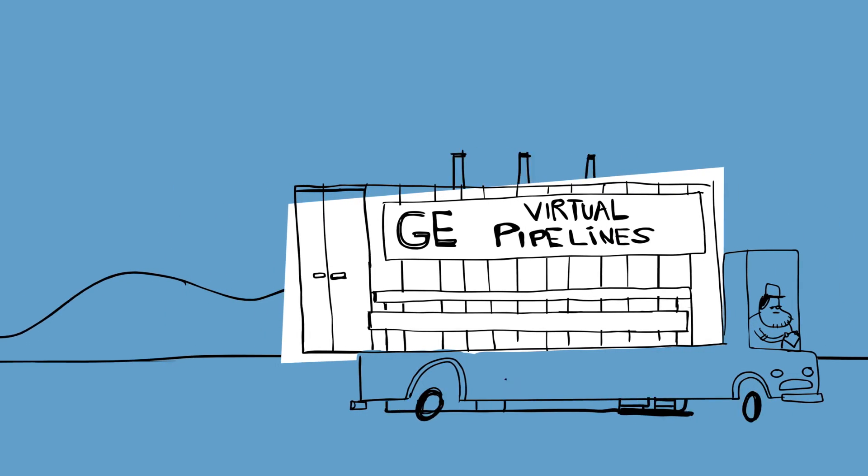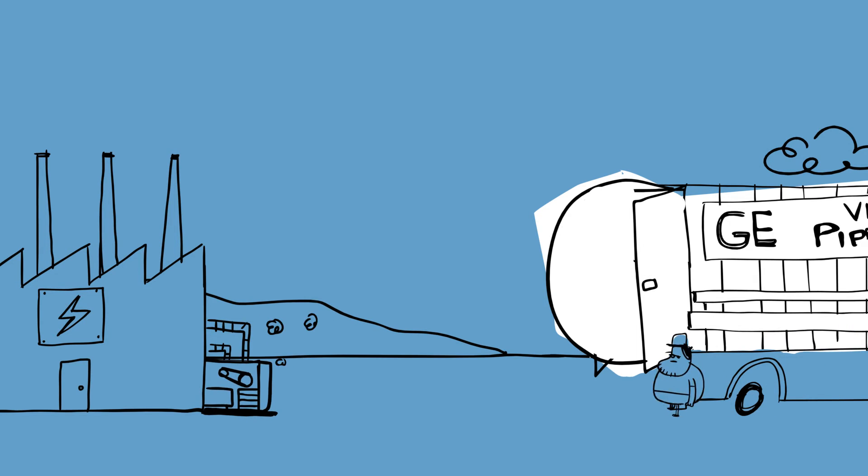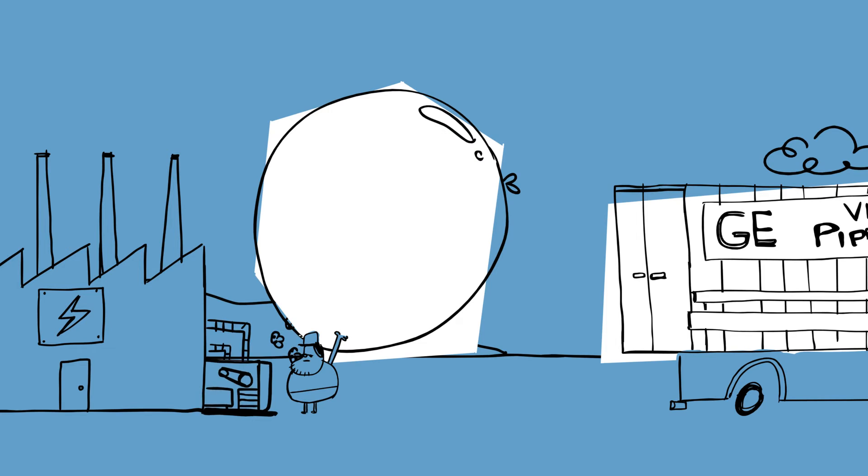These boxes can then travel by road, rail or sea to where power is needed. On arrival at site, the liquid is turned back to gas for power generation.